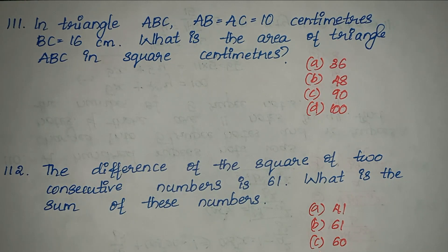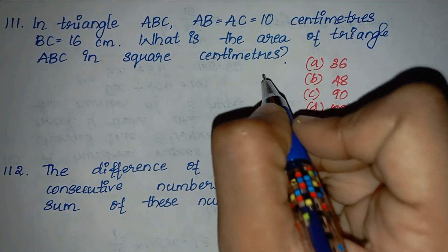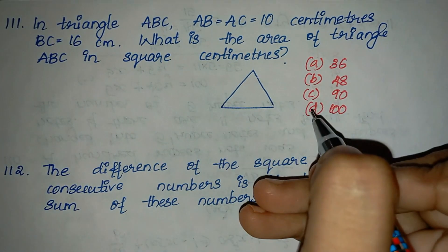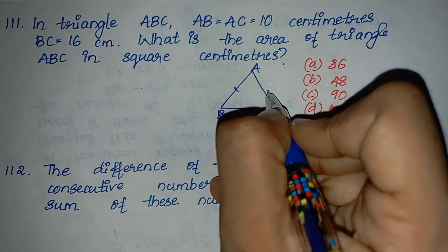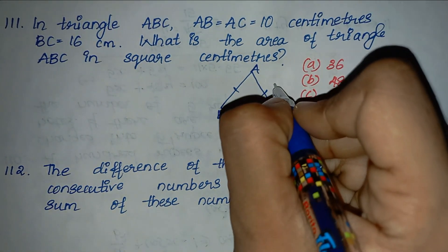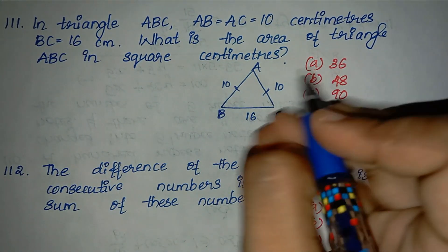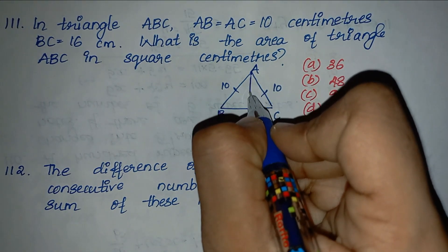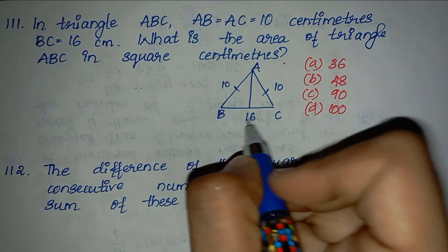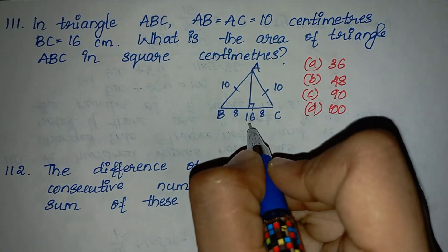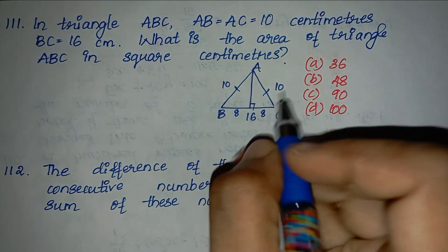Question 111: triangle ABC where AB equals AC equals 10 cm and BC equals 16 cm. Find the area of triangle ABC in square centimetres. Since AB equals AC, this is an isosceles triangle. The base BC is 16 cm, so half the base is 8. We draw the altitude from A perpendicular to BC.